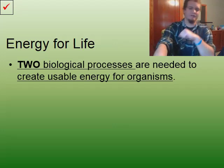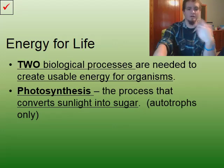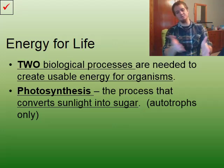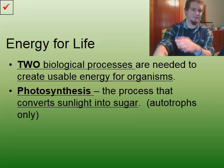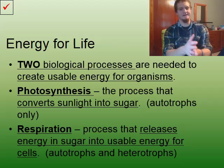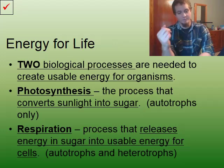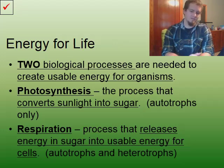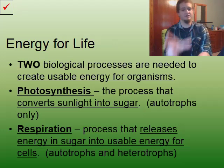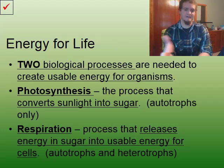There are two biological processes needed to create usable energy for organisms. The first type is called photosynthesis — the process that converts sunlight into sugar. Only autotrophs can do this. The second type is called respiration — the process that releases energy from sugar into usable energy for the cells. Both autotrophs and heterotrophs can go through respiration because it occurs in the mitochondria, which is found in both plant and animal cells.